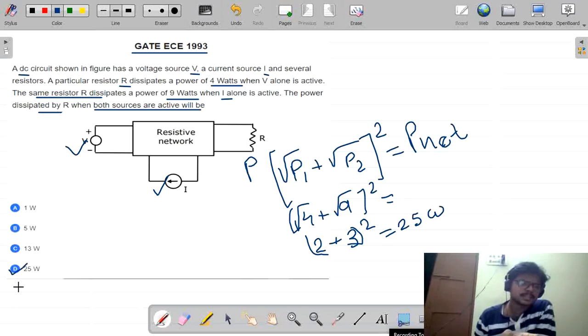By this we can select the option 25 watts which is option D. Another trick - from the equation, we know that power can't be added or subtracted individually. P1 equal to 4 watts and P2 equal to 9 watts. We can't add both them. So 9 plus 4, 13, we can neglect this option.